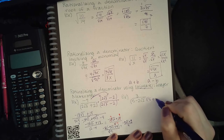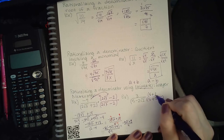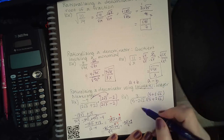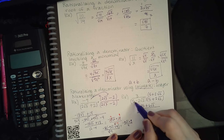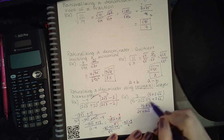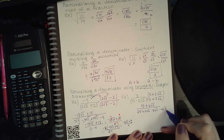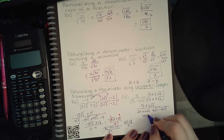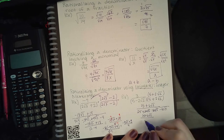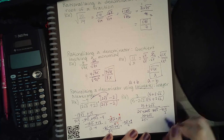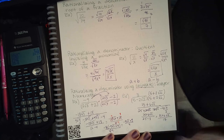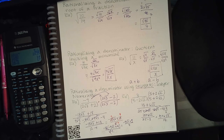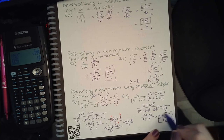Same sign in the front, opposite sign in the middle — and make sure you do it on both top and bottom. For the top I get 15 plus 6 square root of 2. For the bottom I get 25 plus 10 square root of 2 minus 10 square root of 2 minus 4 square root of 4. Those middle terms cancel; 25 minus 4 times 2 is 8, and 25 minus 8 is 17. Since 15, 6, and 17 share no common factor, this is the final answer.